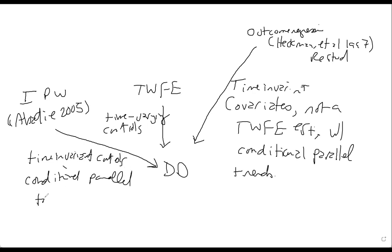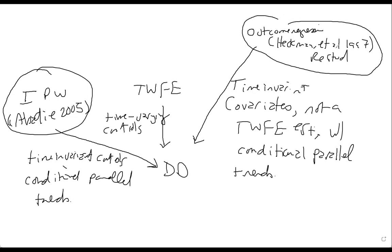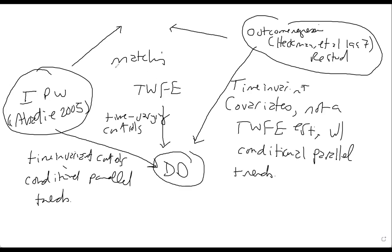Where is this coming from? This one is coming from the matching literature. So there's the matching literature and there's the diff-in-diff literature, and inside the matching literature there was an effort to basically combine both of them in a single estimator called the doubly robust estimator. All that the doubly robust estimator did was take both the outcome regression approach and the inverse probability weighting approach and just combined them.